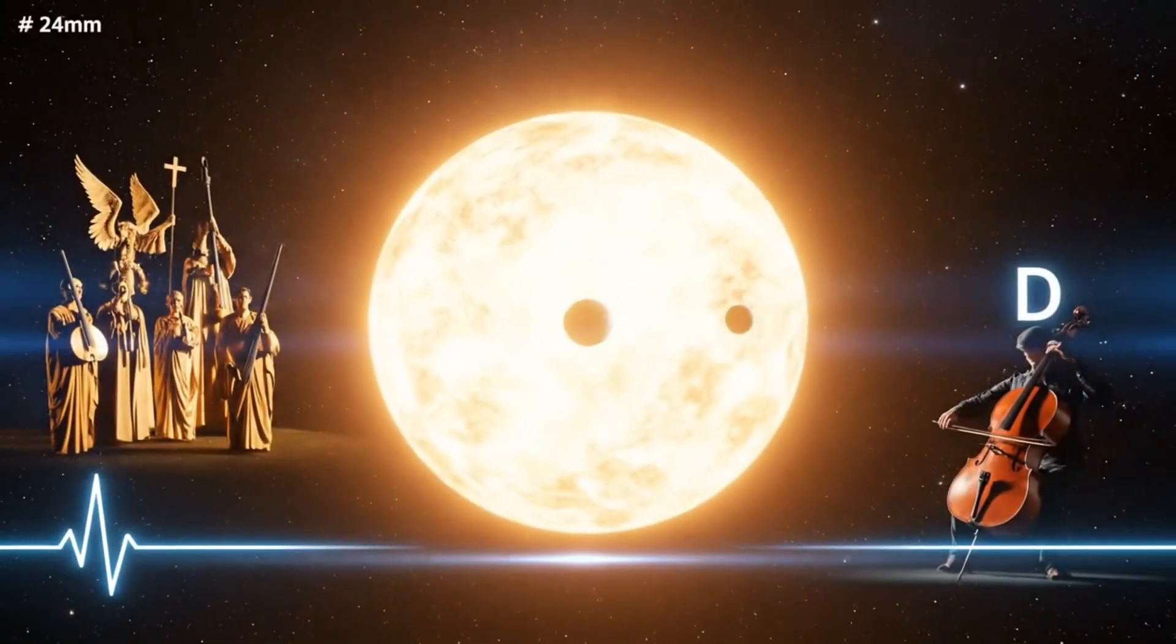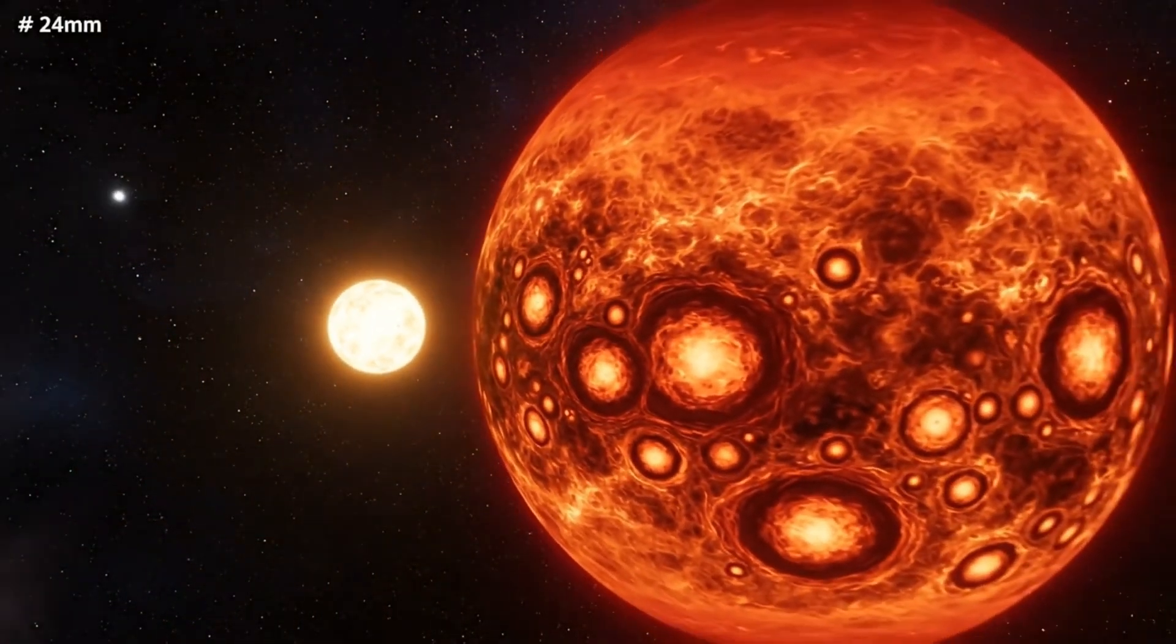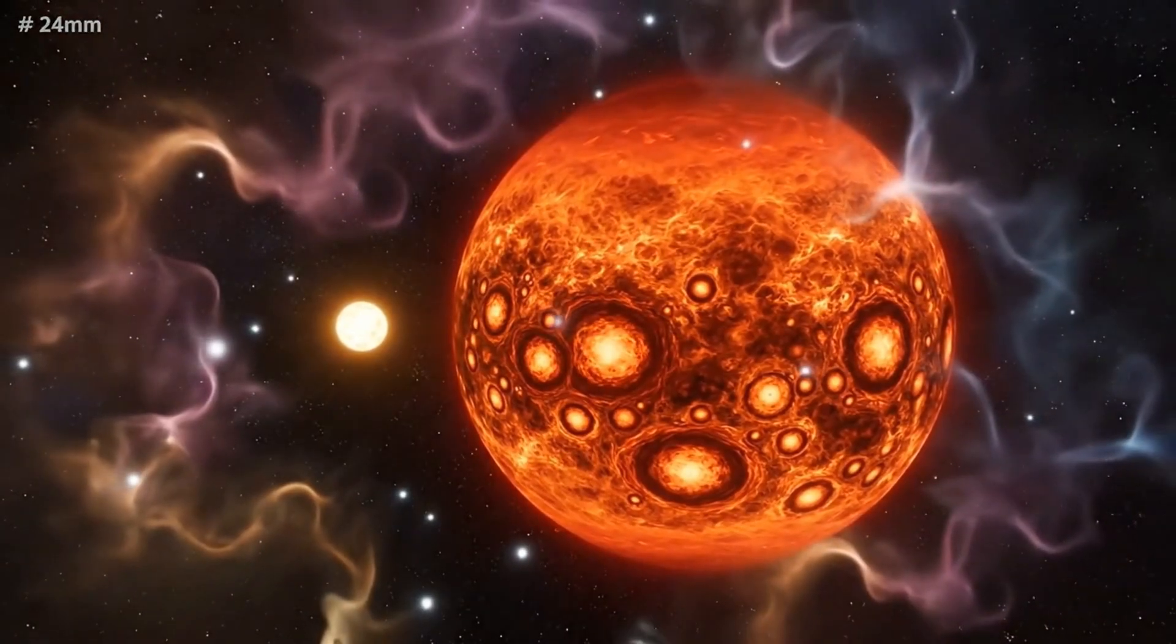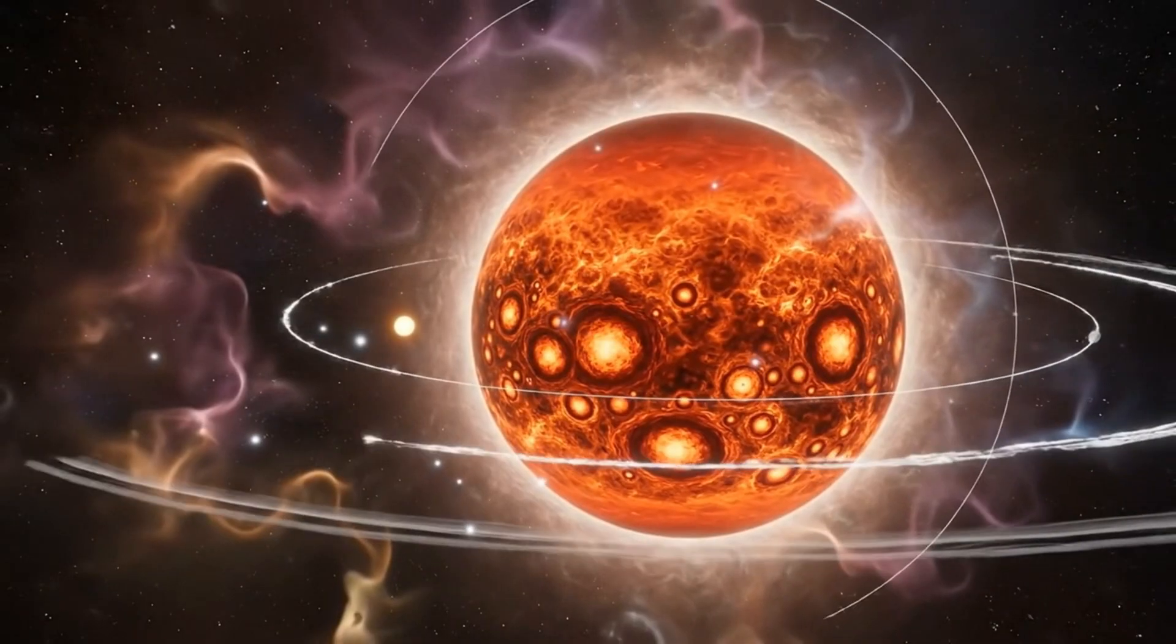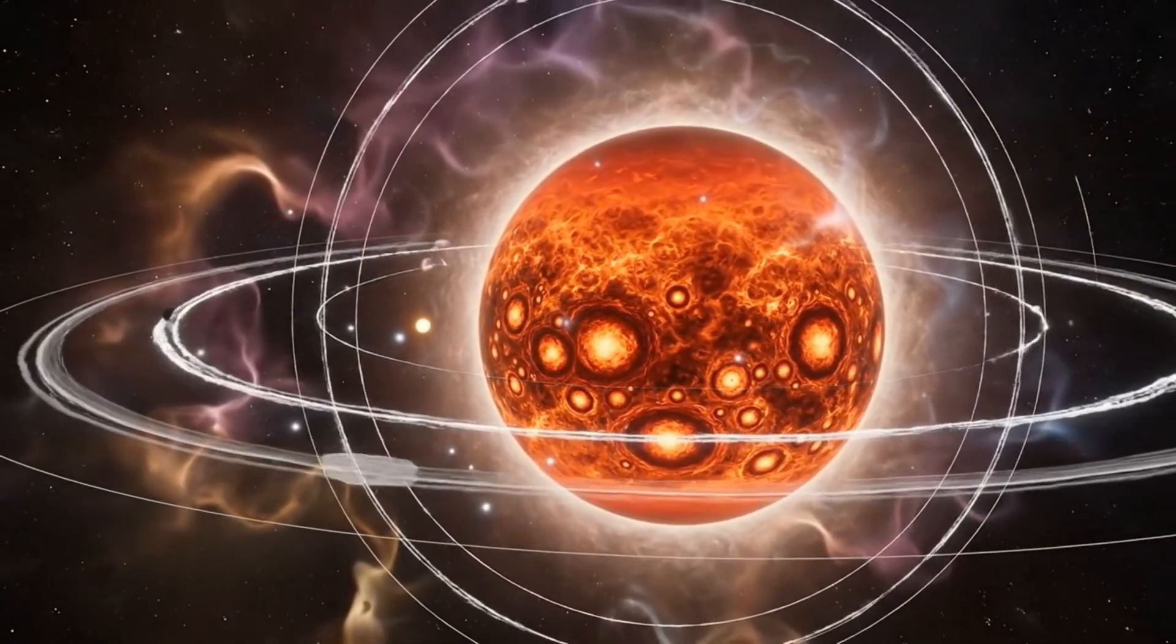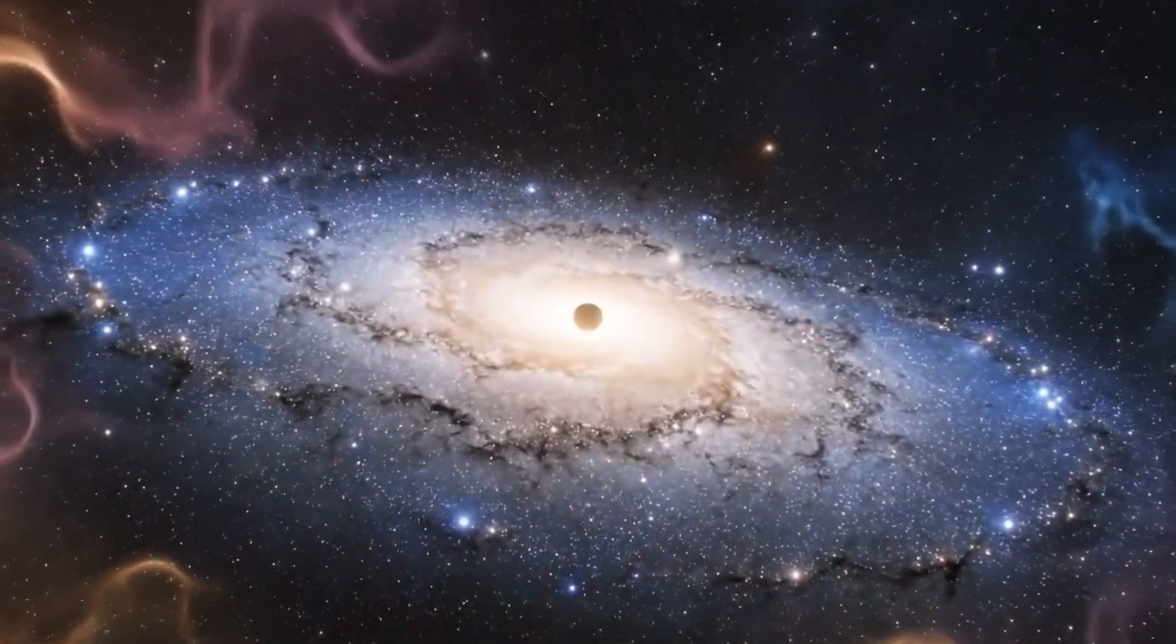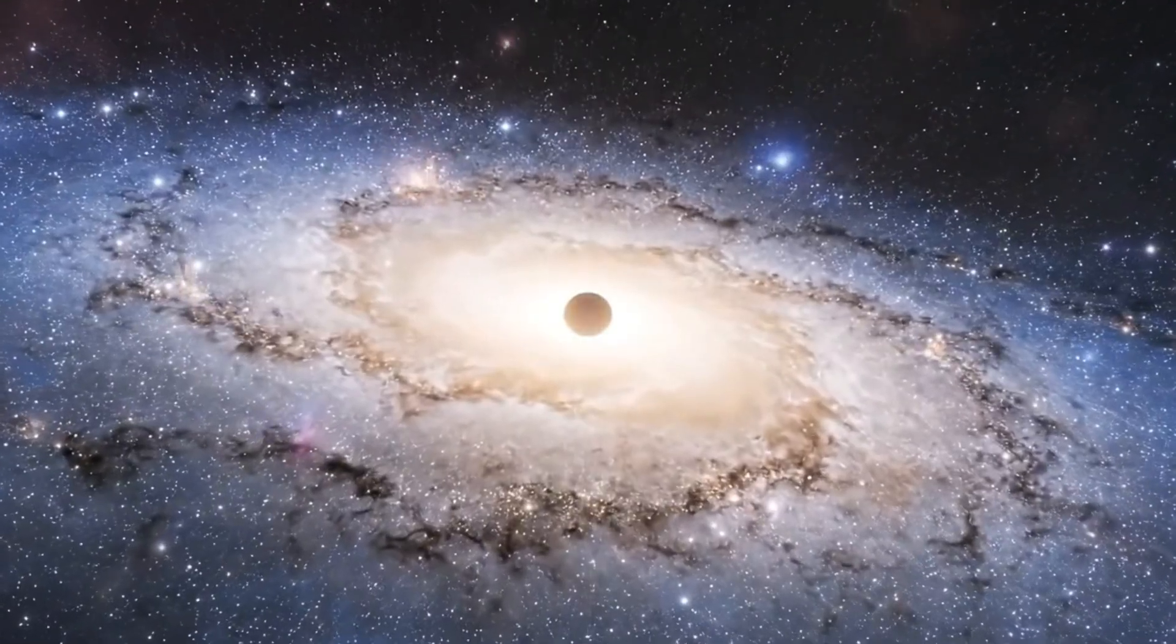Take UY Scuti. A red supergiant over 1,700 times larger than the sun. If you placed it where our sun is, it would swallow Mercury, Venus, Earth, and even Mars. And yet, even UY Scuti is just one of 400 billion stars inside our galaxy.